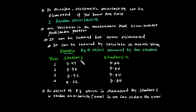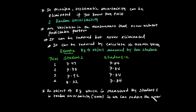Looking at Student 1's measurements for an object of 8 grams, the varying values represent random uncertainty. We cannot eliminate this error, but we can reduce it by calculating the average.